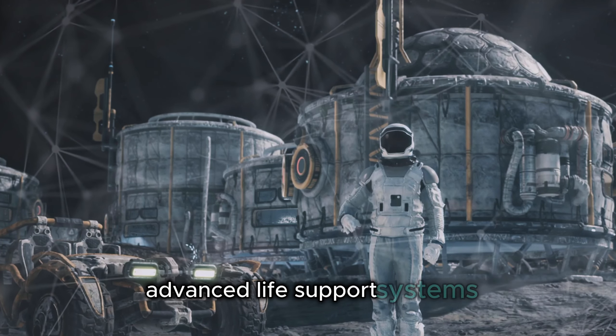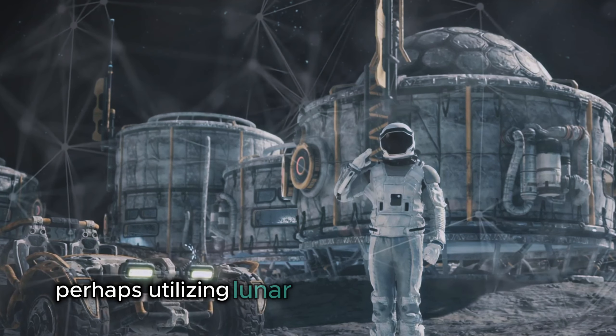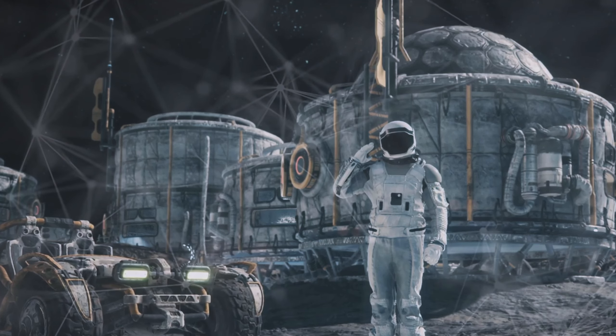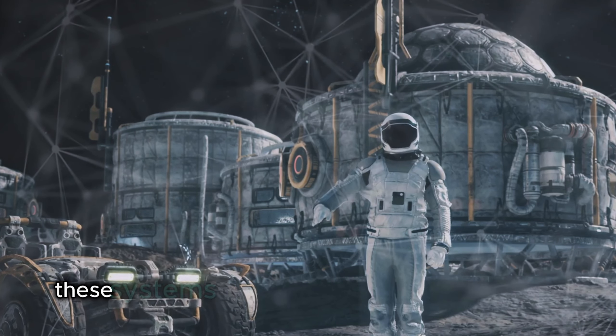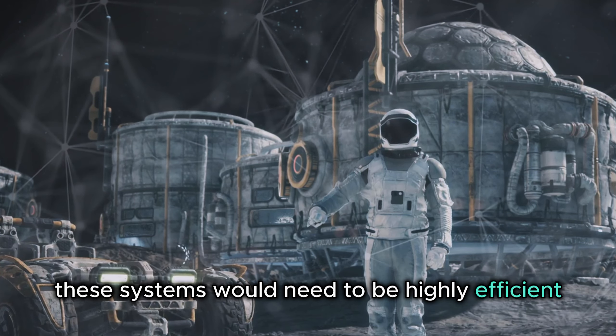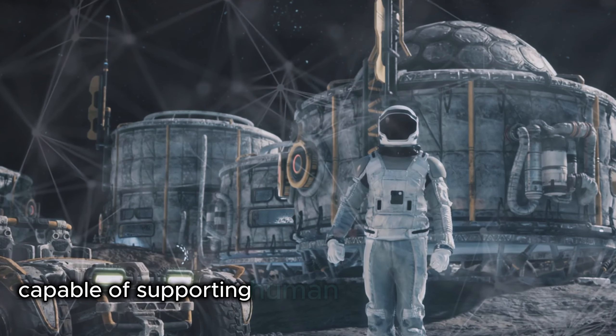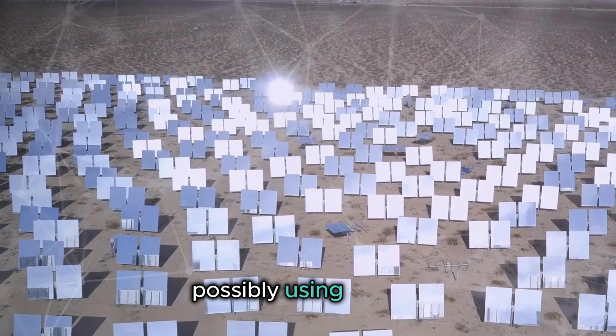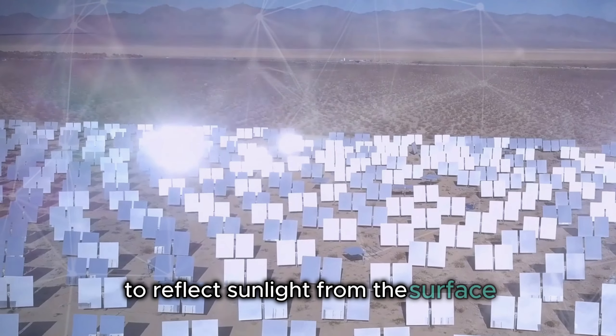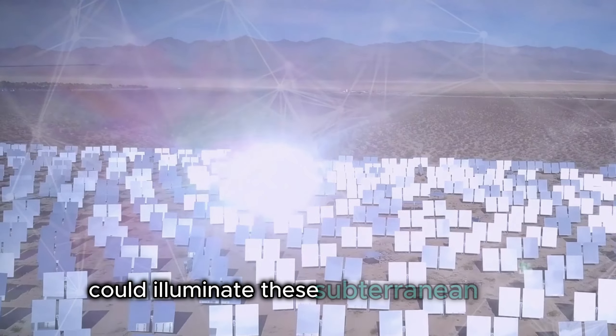Advanced life support systems, perhaps utilizing lunar ice for water and oxygen, could create breathable atmospheres within the tubes. These systems would need to be highly efficient and reliable, capable of supporting human life for extended periods. Innovative lighting solutions, possibly using mirrors to reflect sunlight from the surface, could illuminate these subterranean cities.